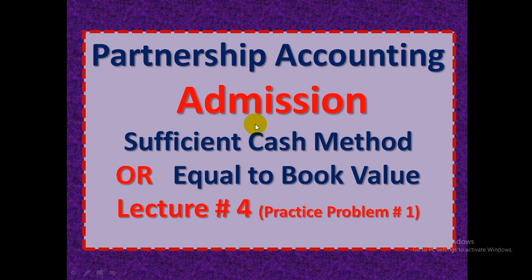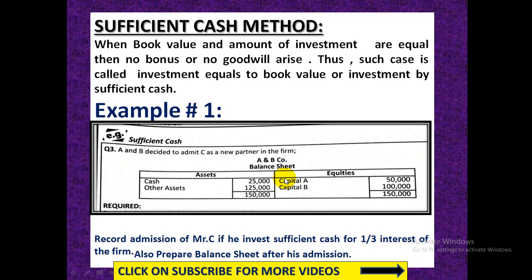Assalamu alaikum students. Let's talk about the sufficient cash method, also called the 'equal to book value' case. Book value means the required amount brought by the new partner is equal to the investment he is making in the business for admission. In such cases, there is no goodwill and no bonus — this is why we call such cases 'equal to book value'.